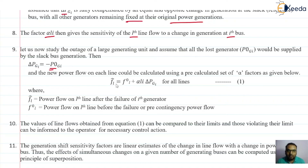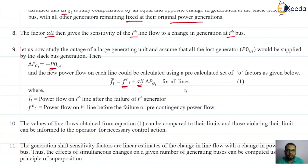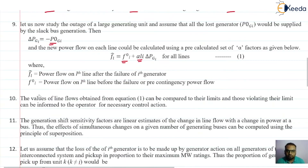This fl-cap indicates the power flow on the lth line after the failure of the ith generator, equal to the power flow of the same line before the failure of the generator — that is the pre-contingency value — plus the generation shift factor multiplied by the change in generation. We can do this for all lines. If we have n number of lines, we can calculate the change in megawatt power flow on each line using this formula. The values of line flow obtained from this equation can be compared to their limits, and those violating their limit can be reported to the operator for necessary control action.